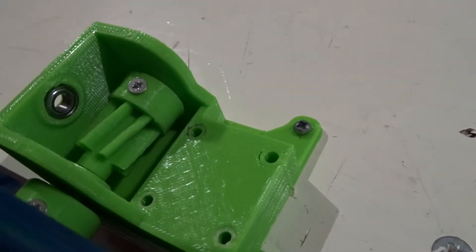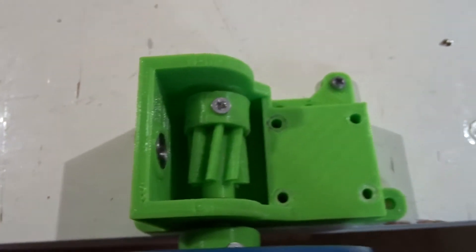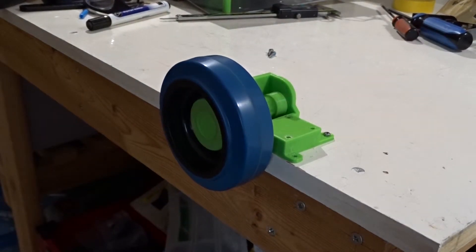So a quick test fit of the drive axle and spur gear with the wheel on it. And these little bearings are great. This wheel spun for ages. Very little friction.